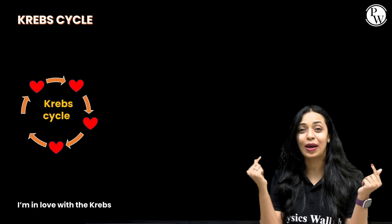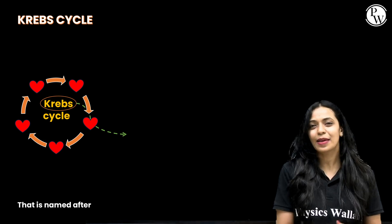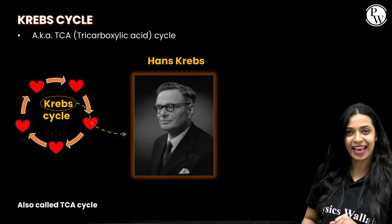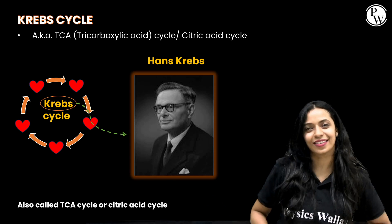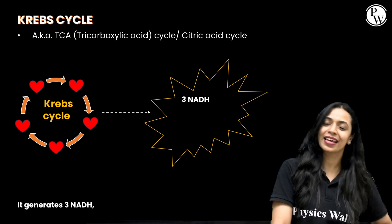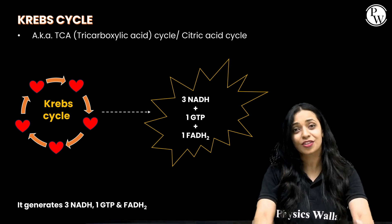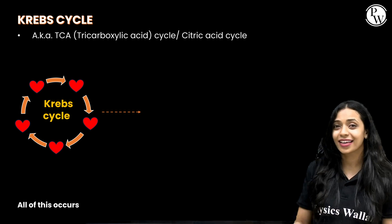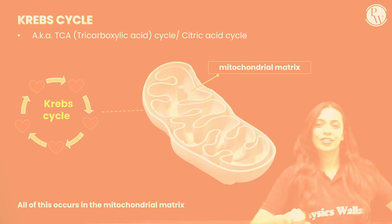I'm in love with the Krebs cycle, that is named after Hans Krebs. Also called the TCA cycle, or citric acid cycle. It generates 3 NADH, a GTP, and FADH2. All of this occurs in the mitochondria matrix.